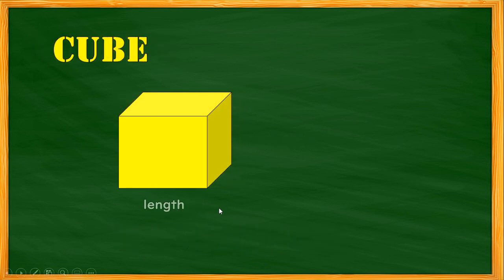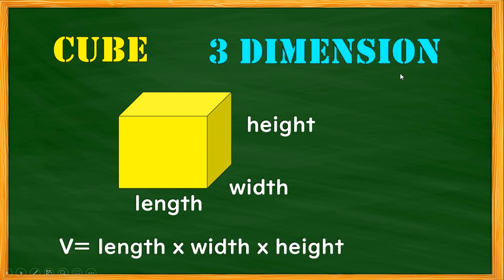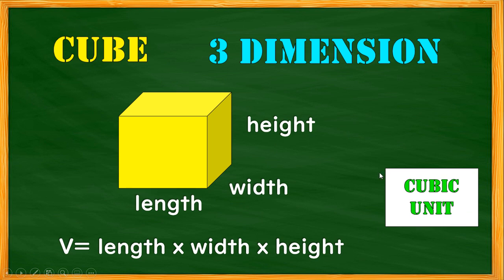Now a cube has a length, a width, and a height. This figure is what we call a three-dimensional figure because it has length, width, and height. To find the volume of a cube, the formula is: Volume equals length multiplied by width multiplied by height, which is the area of the base multiplied by the height. The unit of measurement is in cubic units.